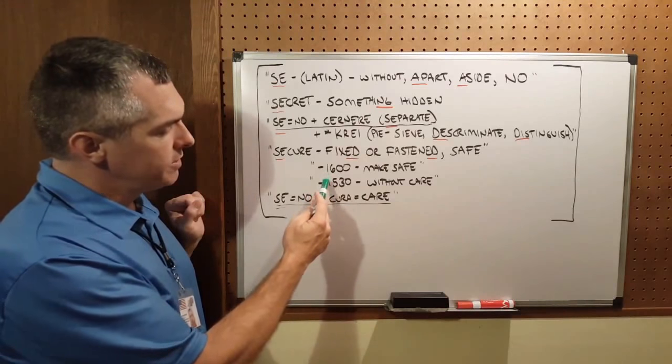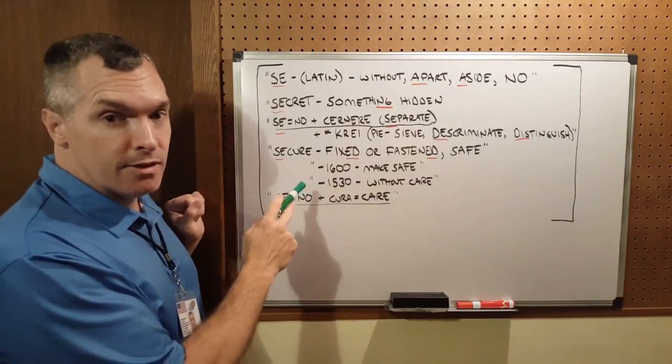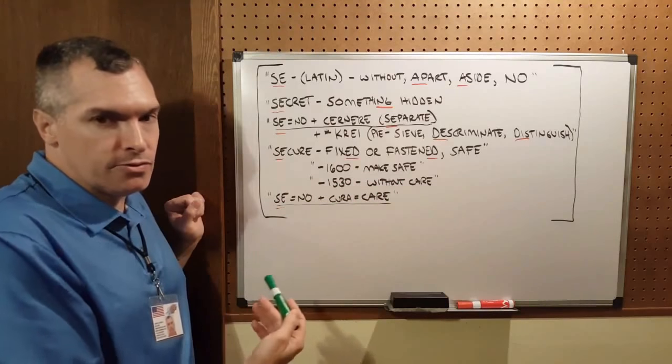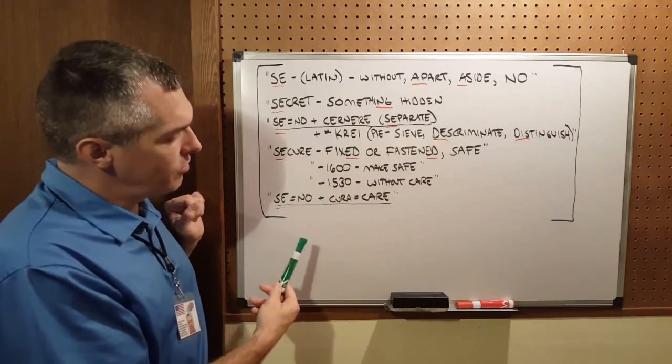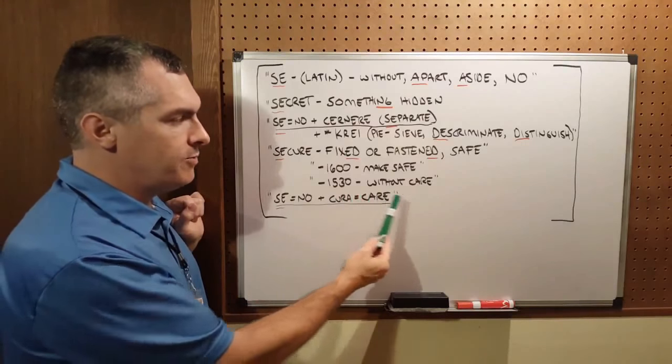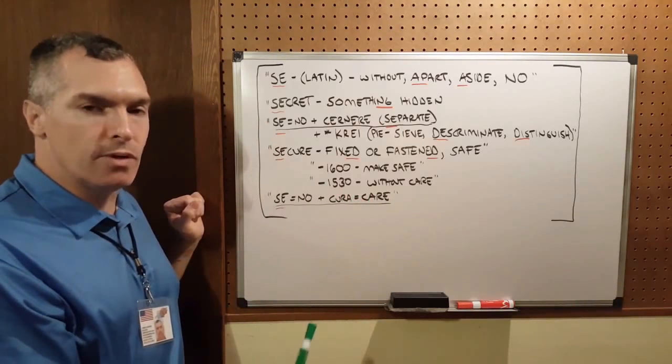In the 1600s, and this is interesting, it was defined as make safe, as Google defines it now. But 170 years earlier, it was defined as without care, which is actually what it means.